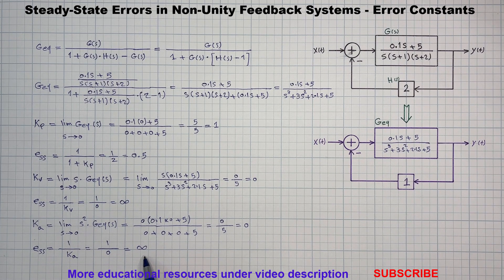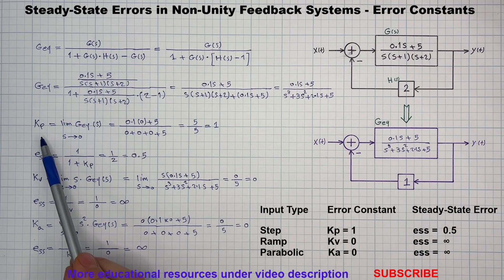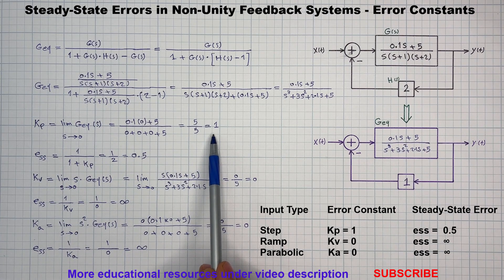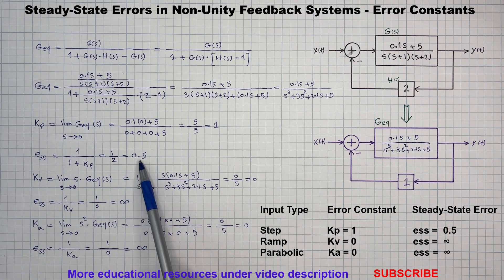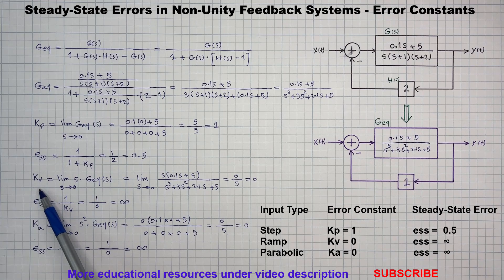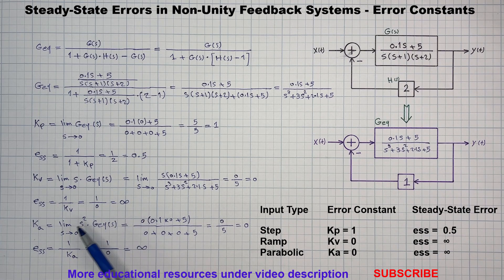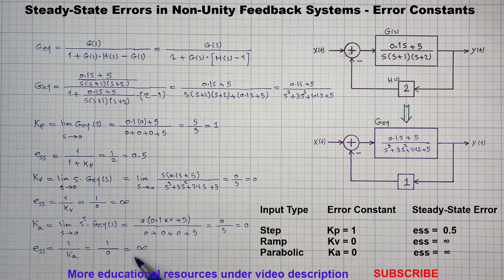So the system performs even worse for parabolic inputs. To wrap up: for the step input, Kp equals 1 and the steady-state error is 0.5. For the ramp input, Kv is zero and the steady-state error is infinity. For the parabolic input, Ka is zero and the steady-state error is infinity. Remember, when dealing with non-unity feedback, the key step is to convert the system into an equivalent unity feedback form before calculating any error constants.